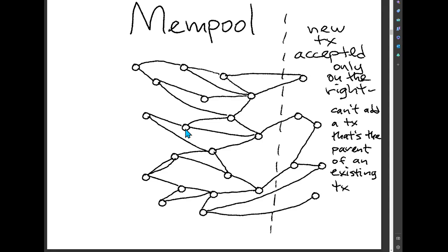There's actually one exception to that — there's something called the orphanage. If a node hears of a transaction for which it doesn't have all parents, just because of timing and variations in network timing, we might not have seen the parent yet. So we can hold on to that transaction for a limited time, and if we don't have all of its parents within some time interval, we'll drop and ignore it. This way, if parents and children come in out of order, we can still be tolerant of that. But in everything I'm going to say here, I'm not talking about the orphanage at all — these are all just regular non-orphaned transactions.